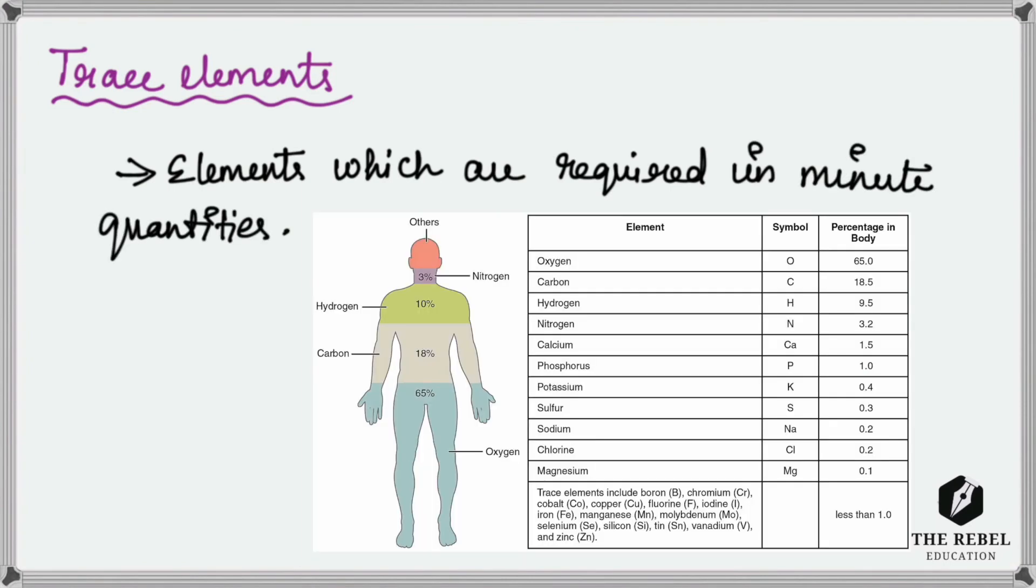Let us see this diagram. As I said, nitrogen, hydrogen, carbon, and oxygen form almost 96% of the living matter. The rest are trace elements which include boron, chromium, cobalt, copper, fluorine, iodine, iron, manganese, molybdenum, and selenium. Even though they are required in very minute quantities, they play a very vital role in physiological functions. For example, iodine is involved in proper functioning of the thyroid gland.